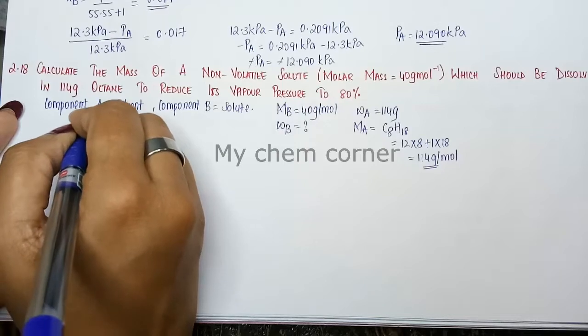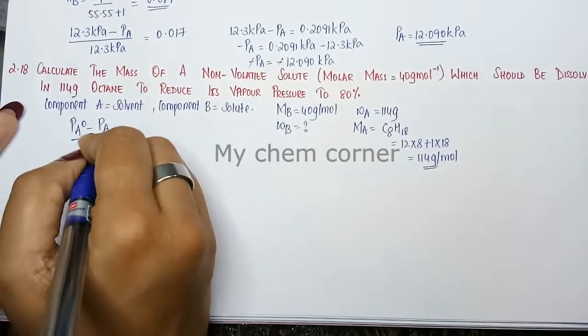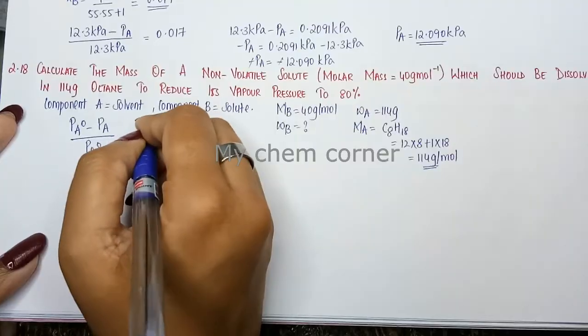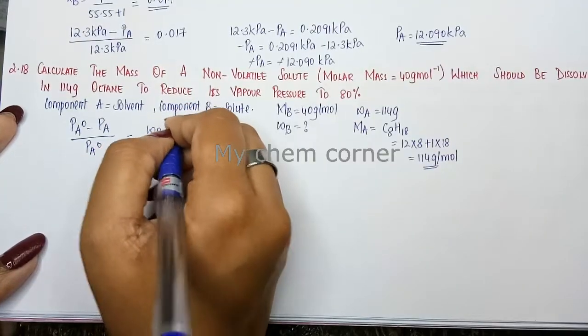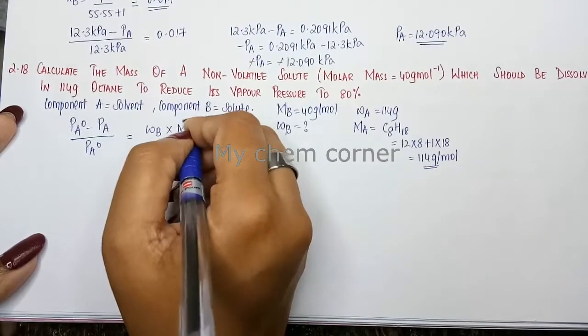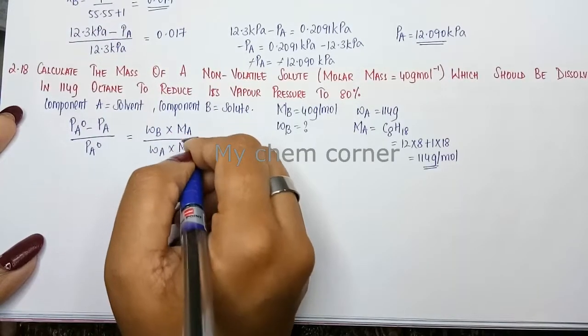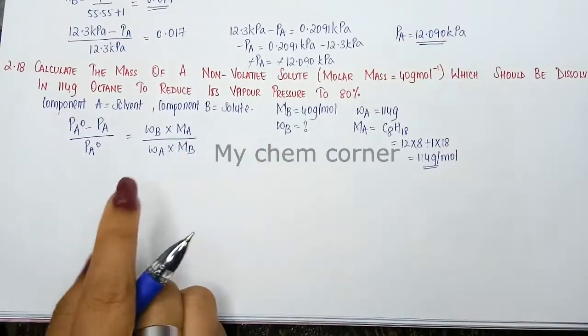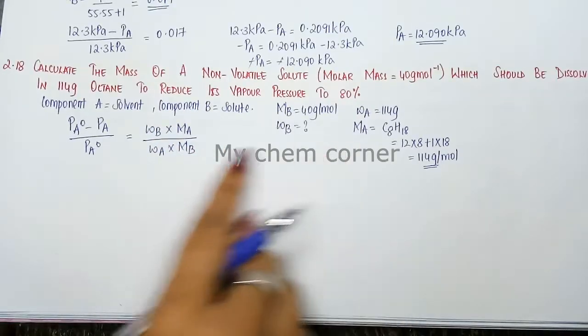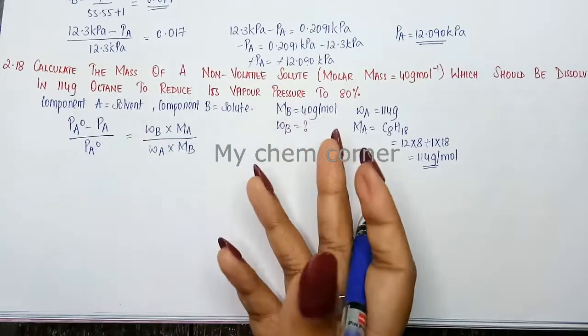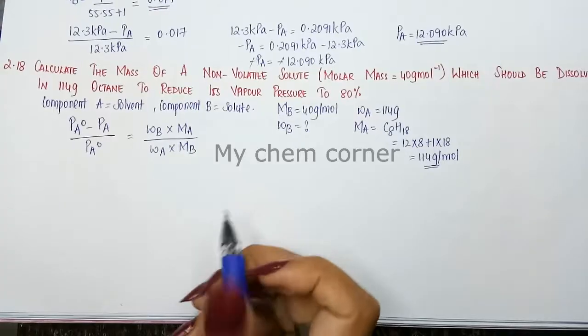So PA0 minus PA divided by PA0 equals WB into MA by WA into MB. All these values we have except for WB - that is what we have to calculate.